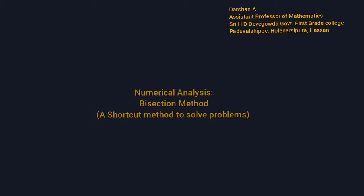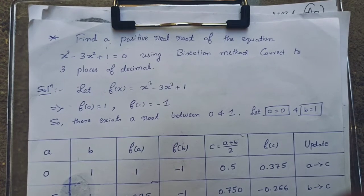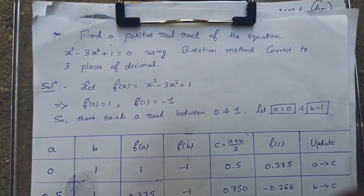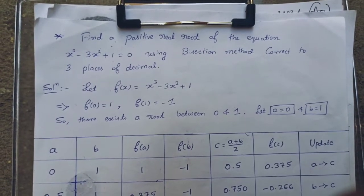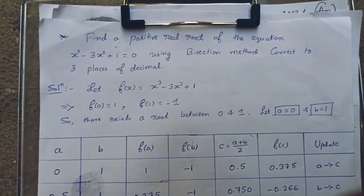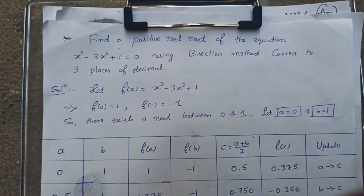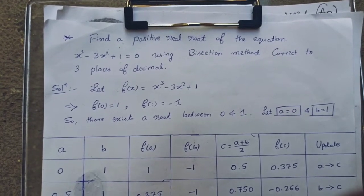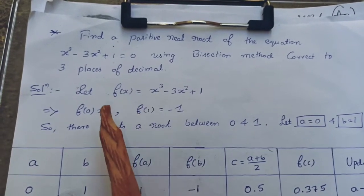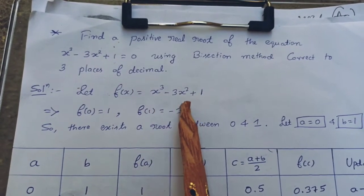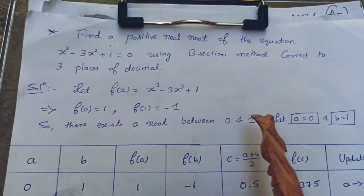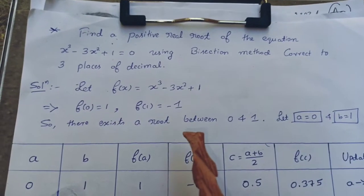Consider the problem: find a positive real root of the equation x³ - 3x² + 1 = 0 using the bisection method, correct to 3 decimal places. First, we take f(x) = x³ - 3x² + 1, and we need to find a and b for which f(a) and f(b) have different signs.